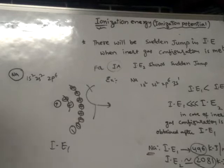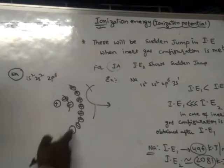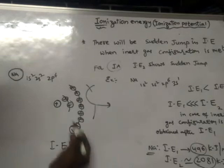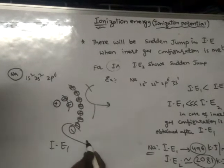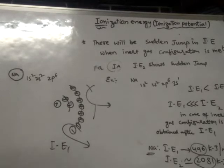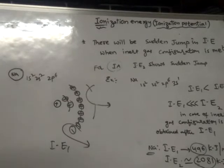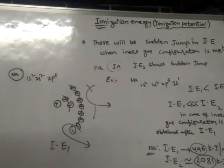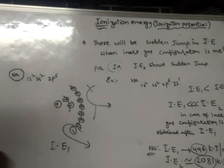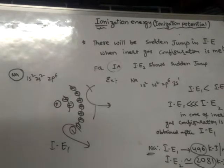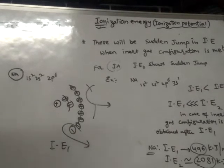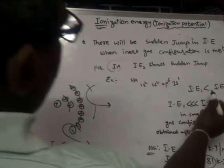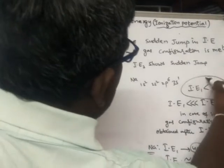Now in order to remove the second electron from this atom, it will be very difficult, because inert gases do not lose electrons easily due to their stable electronic configuration. They do not like to lose electrons at all. Removing any electron from an inert gas configuration requires very, very high energy.